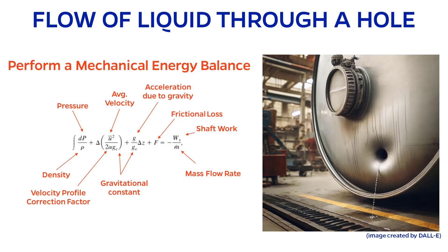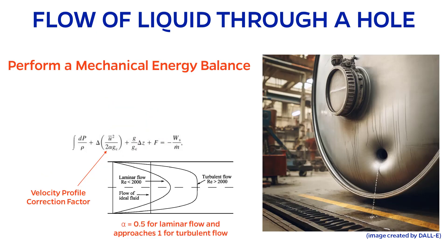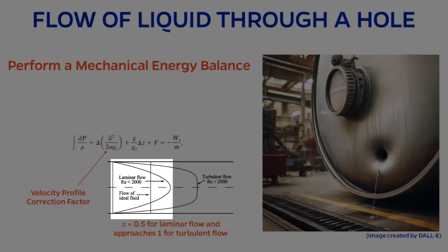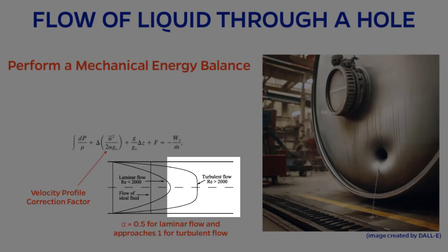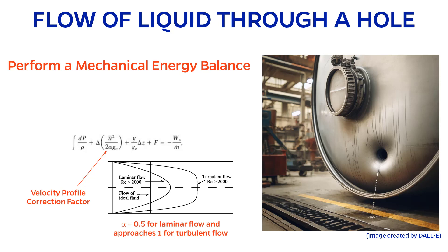You might not have seen the velocity profile correction factor before. This is a number between 0 and 1 that quantifies the uniformity of the velocity profile. For laminar flow, which is not very uniform, alpha equals 0.5. And for turbulent flow, the velocity profile becomes more uniform, so alpha tends towards 1.